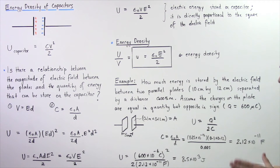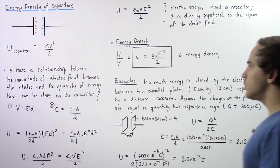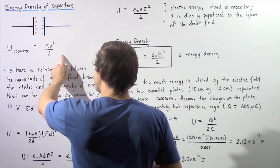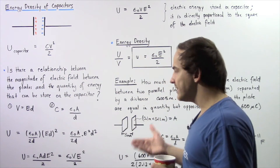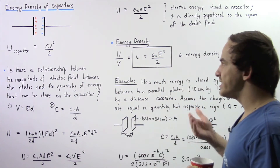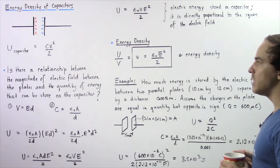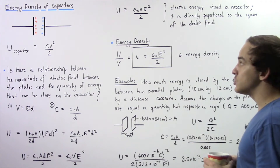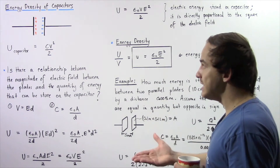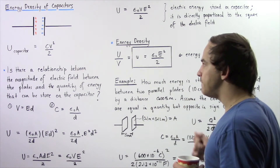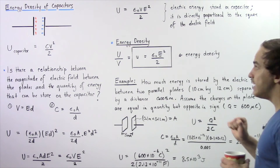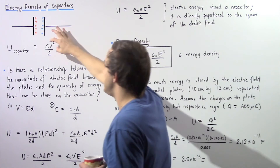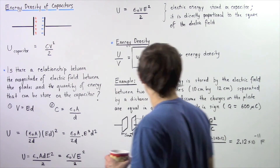We essentially want to use the energy equation. Recall that Q is equal to C multiplied by V, so C is equal to Q divided by V. If we plug that in for C in our energy equation, we get the following result.